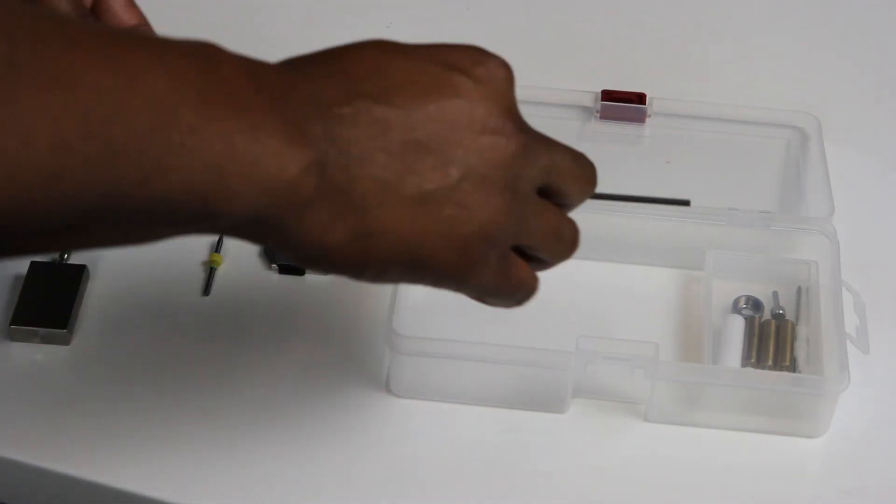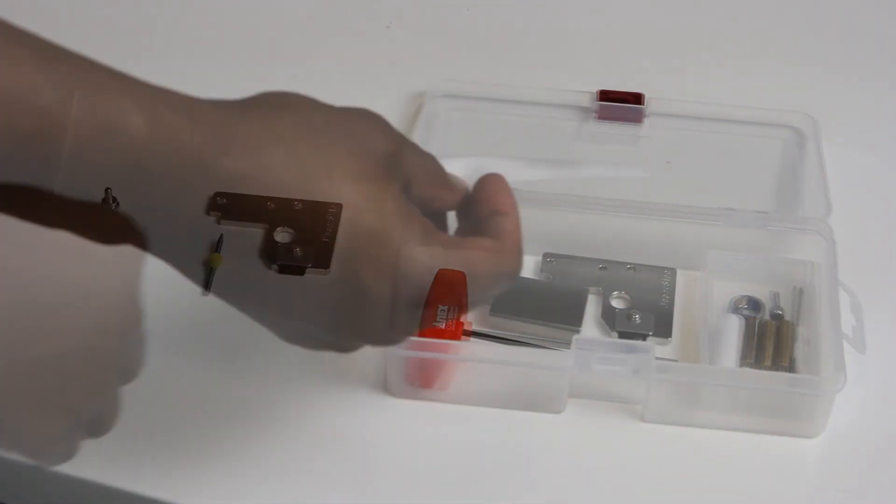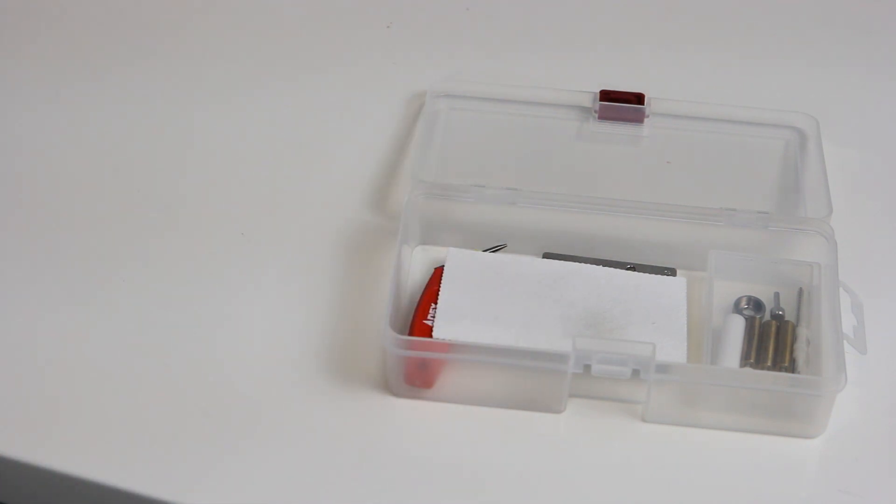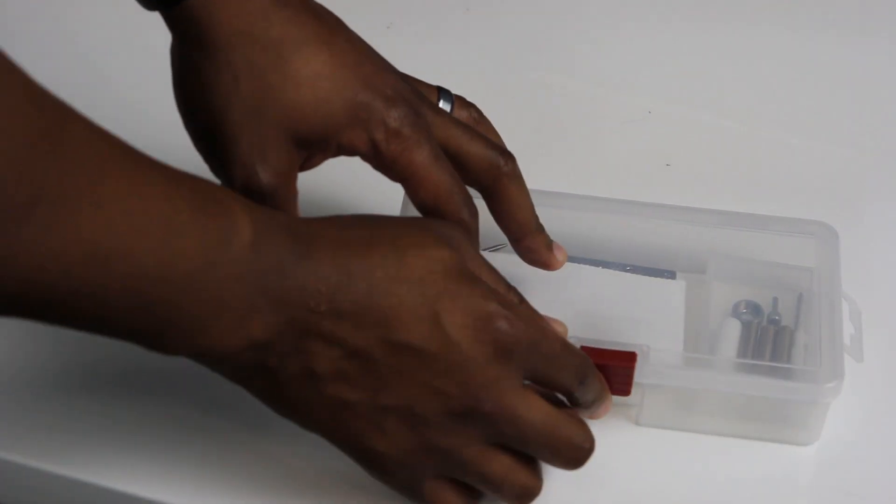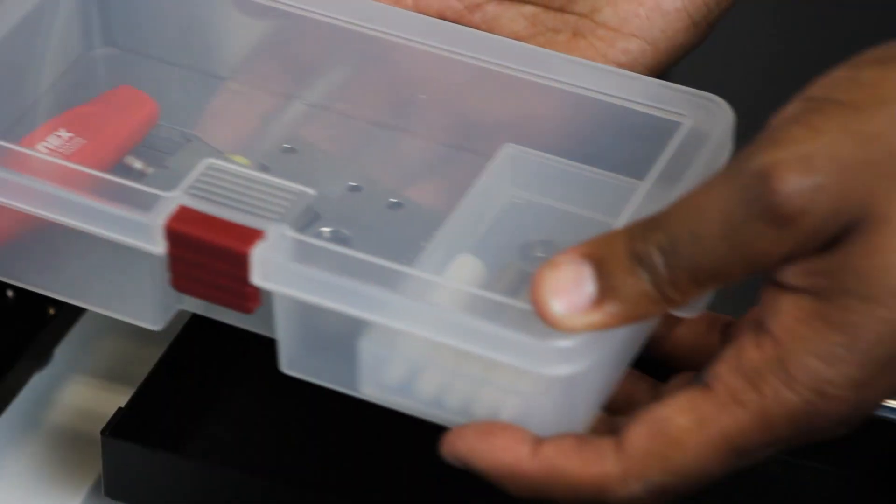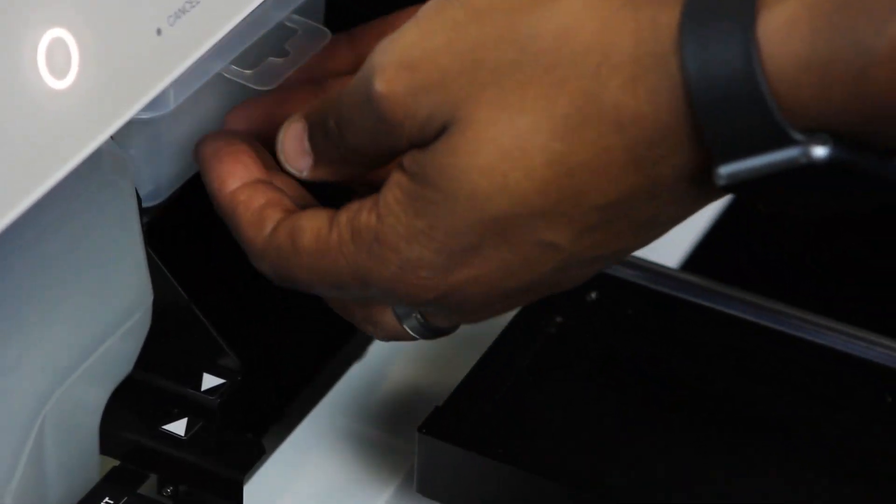After you have successfully removed the automatic correction accessories from your DWX mill, place them in the large storage case and place the large storage case back on the shelf in the bottom cover.